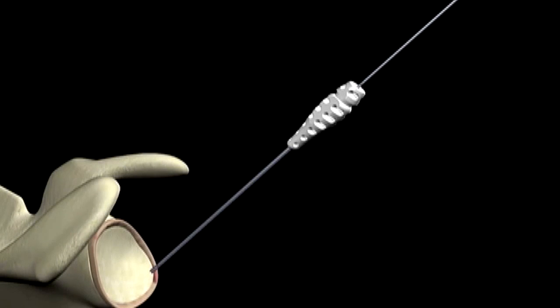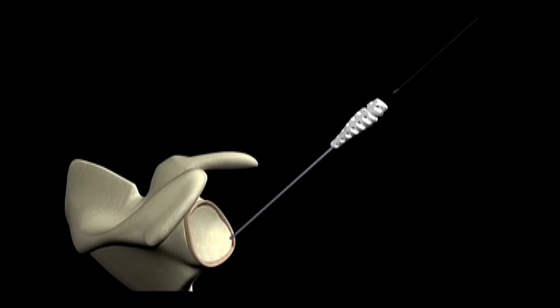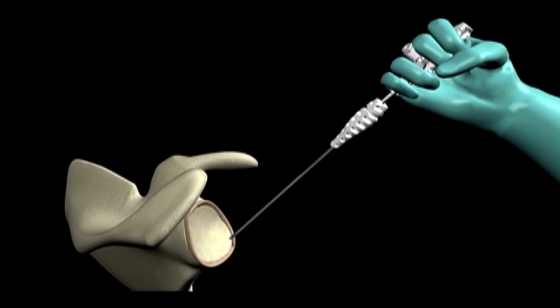While maintaining the guide position firmly against the bone, insert the juggernaut suture anchor through the guide and into the pilot hole.